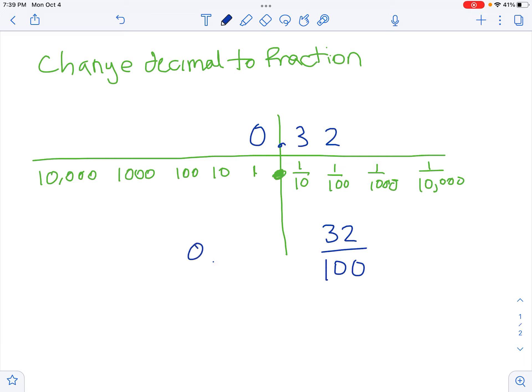So that fraction, 0.32, or just 0.32, is the same as 32 over 100, which reduces to 8 over 25.